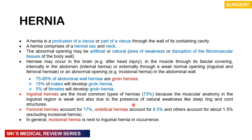What exactly is a hernia? A hernia is just pretty much a protrusion of a viscus or part of a viscus through the wall of its containing cavity. Notice how I haven't used the word 'abnormal' — because if you imply it's an abnormal protrusion, it means there would be a normal protrusion. So just think of a hernia as a protrusion of a viscus through the wall of its containing cavity.